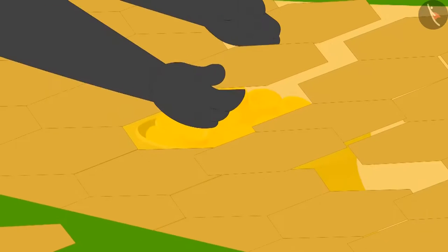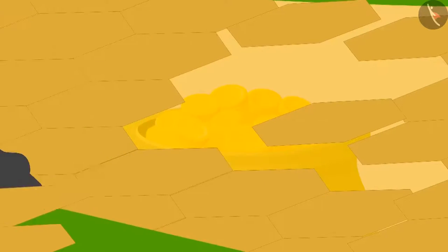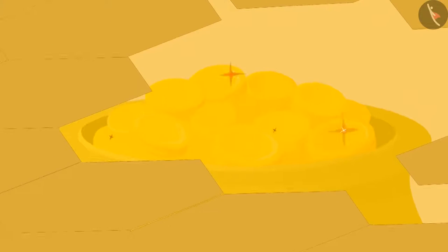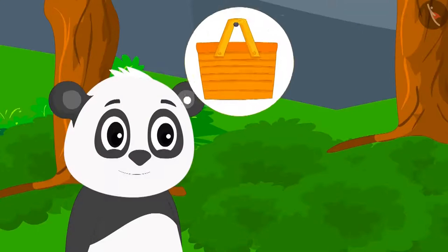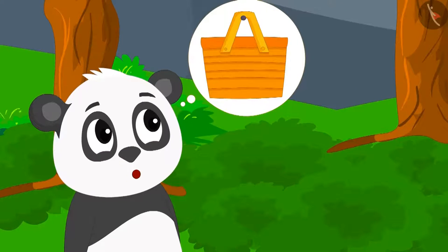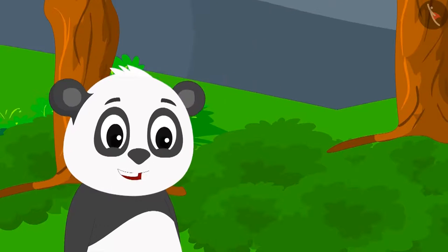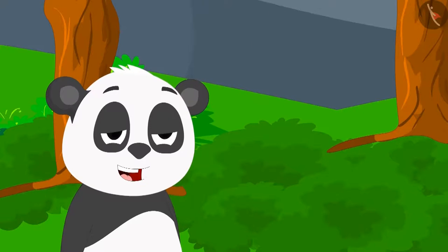He removed all the tiles laid by Babban. Just like Babban, he also saw a lot of gold coins inside that vessel. Like Babban, Golu also decided to come and take away that treasure the next day.